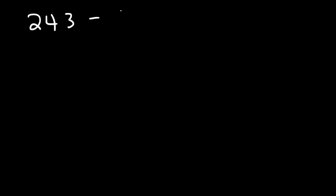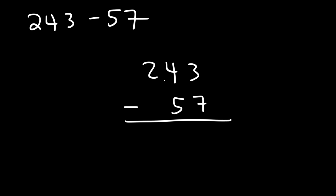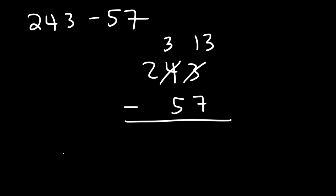Try this one: 243 minus 57. First, we have 3 minus 7, which is negative 4, so we're not going to do that. Let's borrow a 1. The 4 will become a 3, and the 3 will change to 13. So we transfer the 1 from the 4 to the 3, giving us 13. And so here we're going to have 13 minus 7, which is 6.